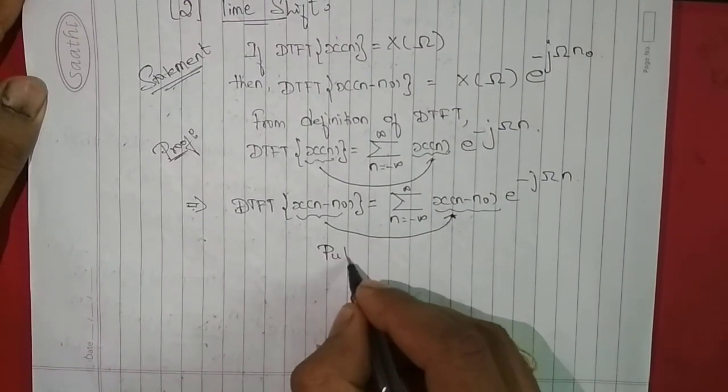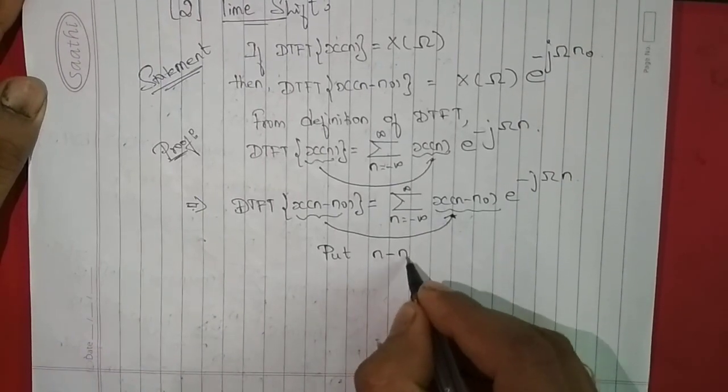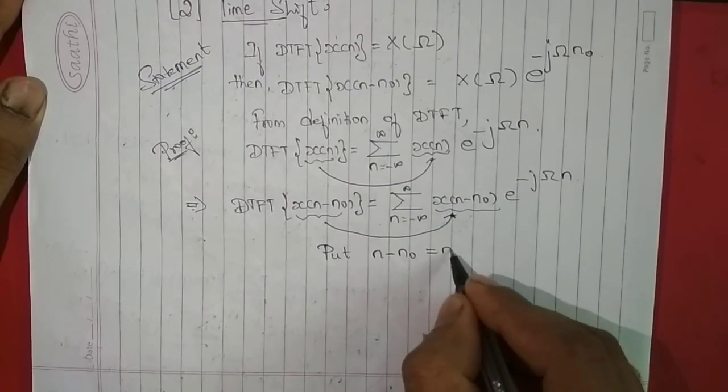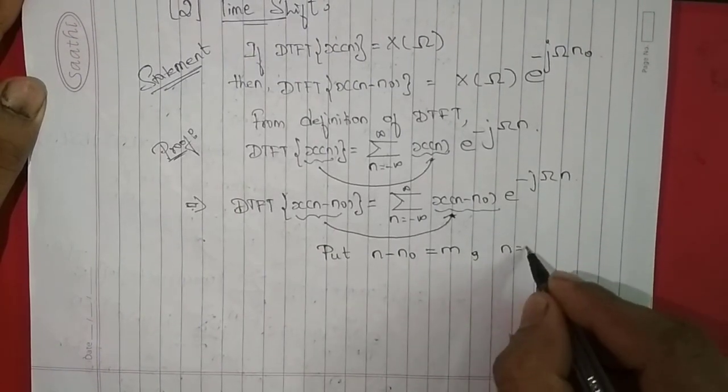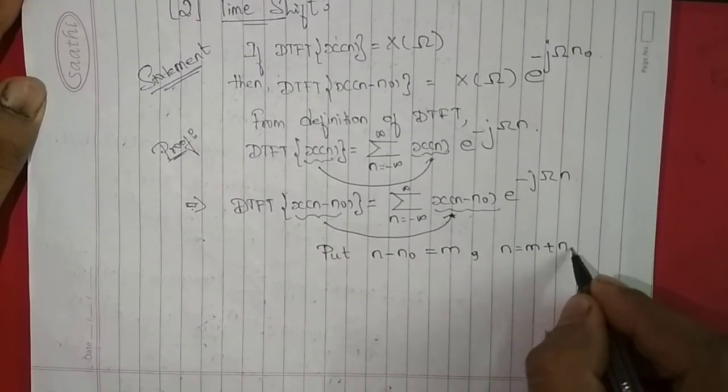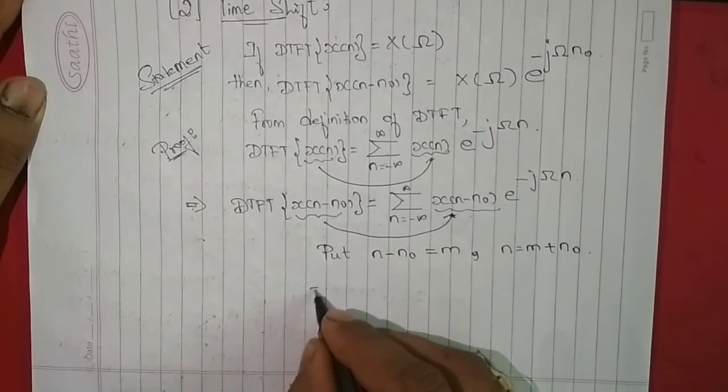In the next step, what we do is we are going to replace or put n-n0 with a dummy variable m, and we are going to write this equation in terms of n. So that is n = m + n0.